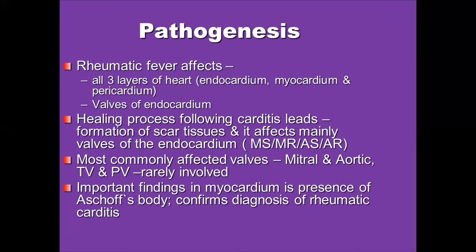The scar tissue mainly affects the valves of the endocardium, leading to mitral stenosis, mitral regurgitation, aortic stenosis, or aortic regurgitation. The mitral and aortic valves are most commonly affected, while the tricuspid and pulmonary valves are rarely involved. An important finding on myocardial biopsy is the presence of Aschoff bodies, which confirms the diagnosis of rheumatic heart disease.